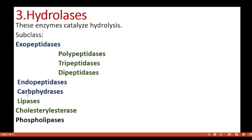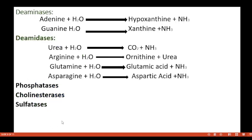Carbohydrases include sucrase, maltase, and others. These are sub-subclasses. Lipases include polyesterases and phospholipases; phospholipases act on phospholipids.